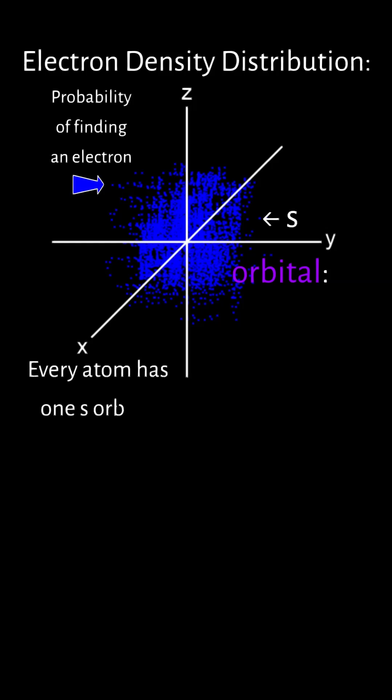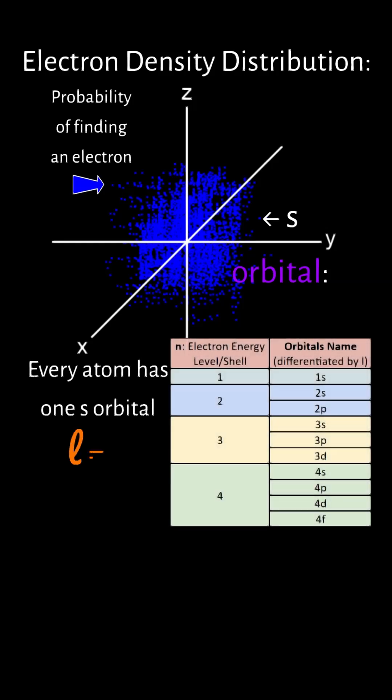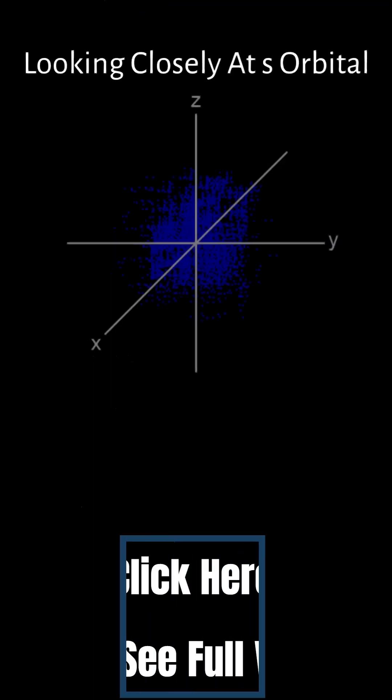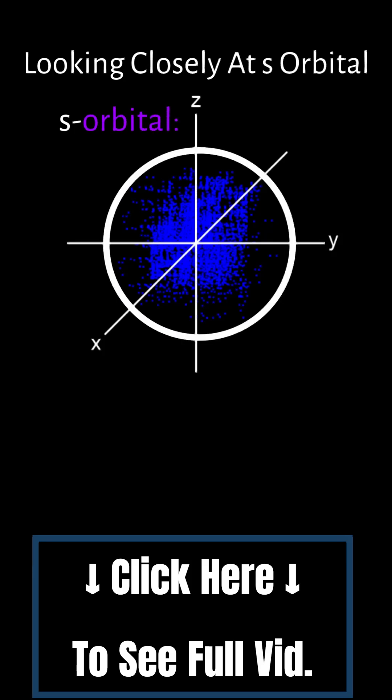Every atom has one s-orbital since it is the orbital that corresponds to L equals 0, and m sub L is also 0. Looking closely at this s-orbital, we can see that it is spherically shaped, which is a good way to remember it.